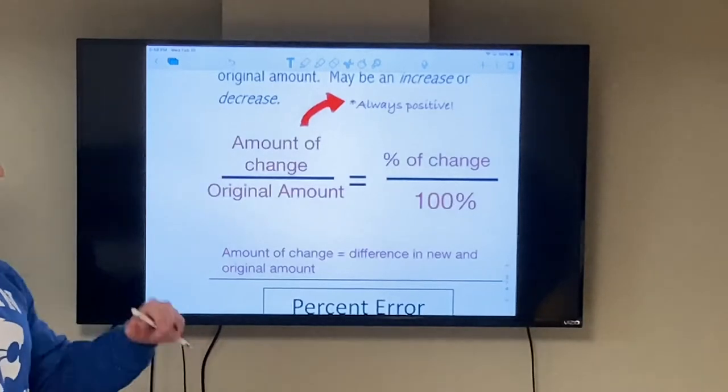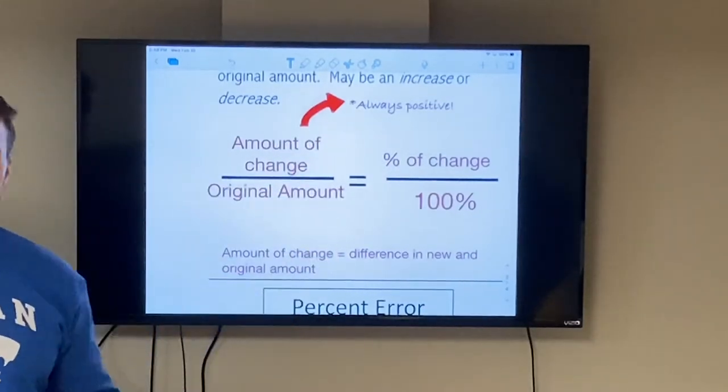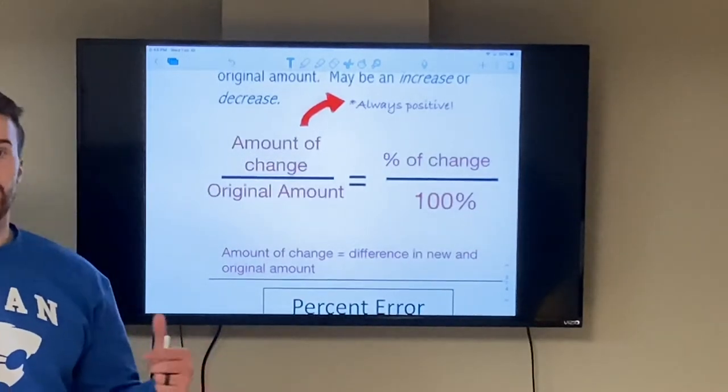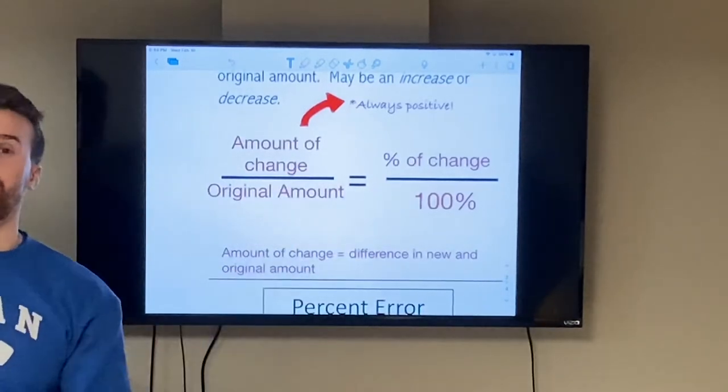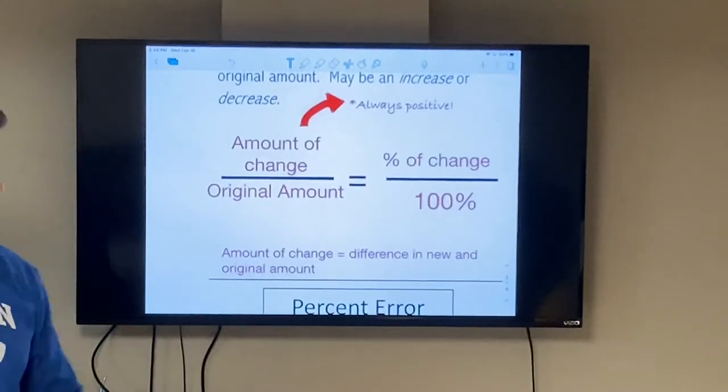Now the part is going to be represented by the amount of change, which is always a positive value, and the whole is going to be the original amount, which is the first amount in the problem. Now sometimes we'll get the percent of change, sometimes we'll have to find it, and we'll have to cross multiply and divide to do so.